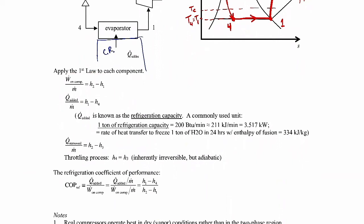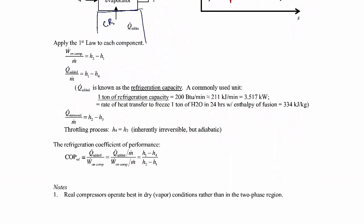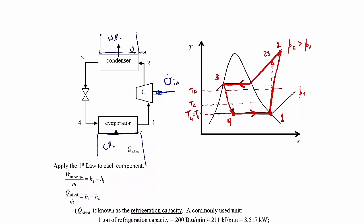This is essentially review — nothing new here. Real compressors operate best in a vapor environment rather than with a liquid-vapor mixture, due to the engineering design of compressors. Compressors used in most refrigeration units tend to be relatively low efficiency, around 40% to 55%, primarily due to cost. Nobody wants to pay $3,000 for a refrigerator, so lower-efficiency compressors are used. What drives most consumers is cost, not necessarily efficiency.